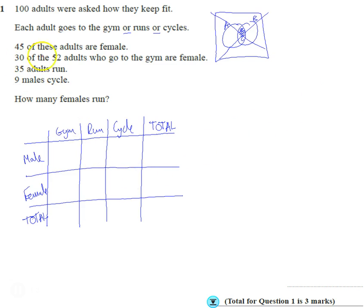So 45 are female, so we know there's a hundred overall for the first bit, there's a hundred. And then it says 45 are female. So 45 female, and if there's 45 female, there must be 55 males.